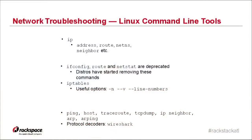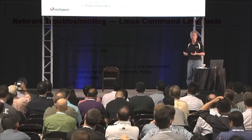IP tables is something critical to know in troubleshooting Neutron. The -v option is very helpful because it gives packet statistics for every packet that matched a rule. We can use a watch command to see how packets are progressing through the various IP table chains if we suspect that's where packets are being lost. Line numbers is also helpful because it gives a numbered order of rules within a chain. Ping, host — all these commands are important tools to remember for troubleshooting Neutron.